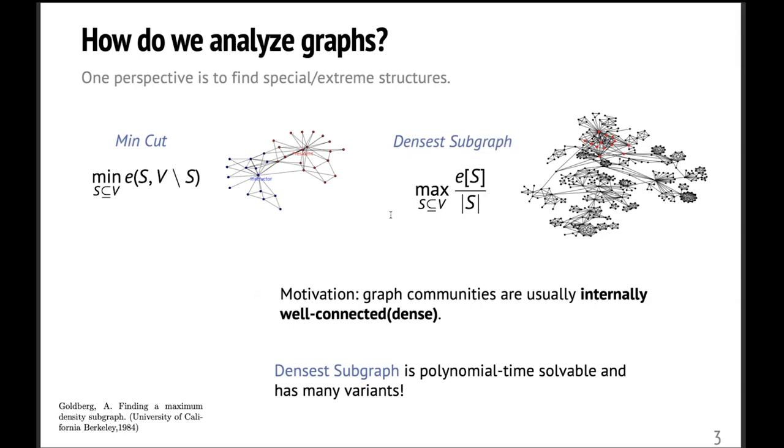And the motivation for studying densest subgraph is that a lot of graph communities are usually very internally well connected. In other words, they are very dense. So the densest subgraph objective can capture these structures. And densest subgraph is polynomial time solvable. And along the past four decades, there has been a lot of different variants of it.